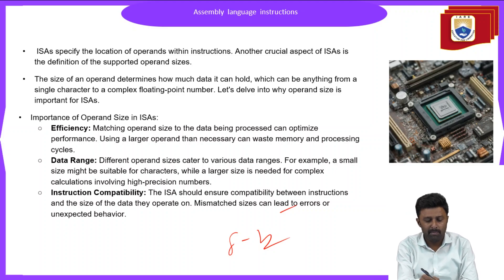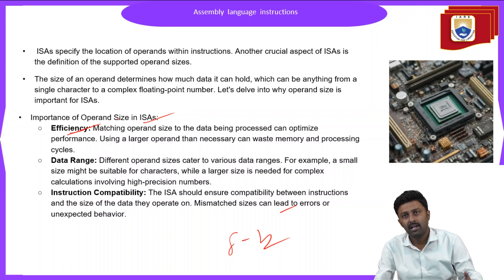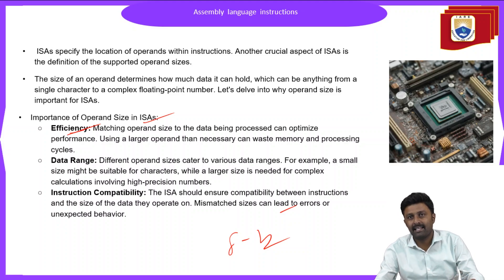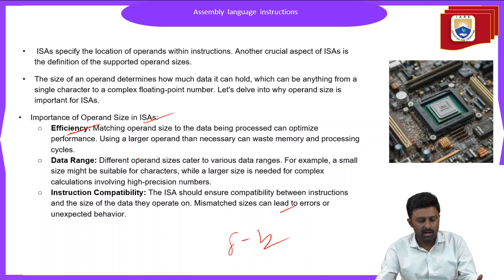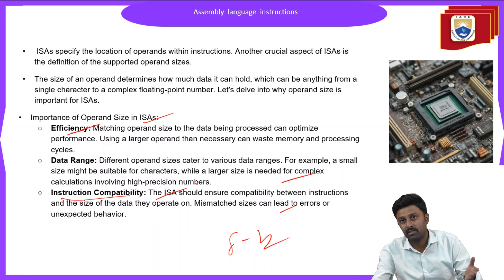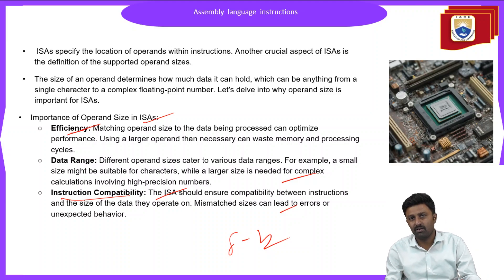There are several important parameters of operand sizes in instruction architecture. The first is efficiency: matching the operand size to the data being processed can optimize performance, and using larger operands than necessary wastes memory and processing cycles. The second is data range: different operand sizes cater to various data ranges — a small size might suit characters, while a large size is better for complex high-precision calculations. The third is instruction compatibility: the ISA must ensure compatibility between instructions and the size of data they operate on, as mismatches can lead to errors or unexpected behavior.